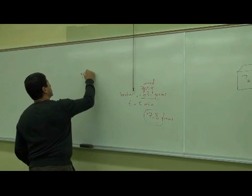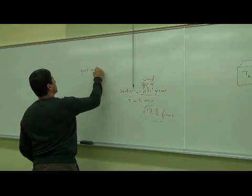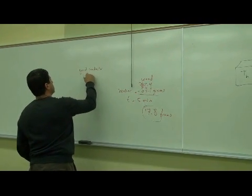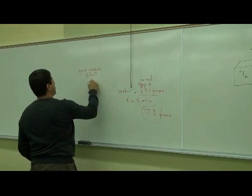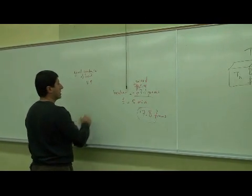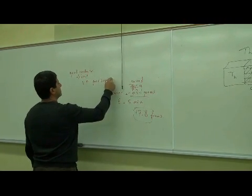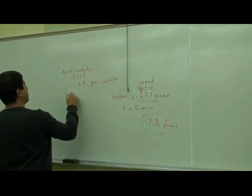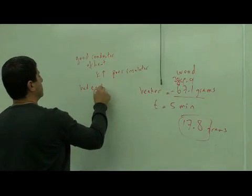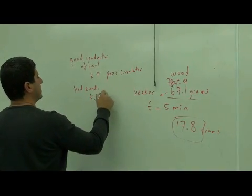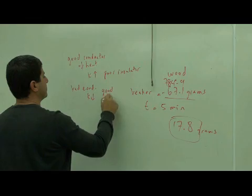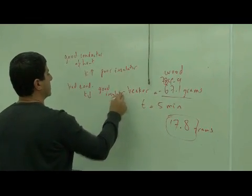Good conductor of heat means the K is high, that means it's a poor insulator. Bad conductor of heat, K is low, that means it's a good insulator.